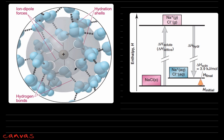The Na⁺ ion is surrounded by a primary hydration shell of water molecules (oxygen facing inward). Beyond that, water molecules hydrogen-bonded to the first shell form a secondary hydration shell. The ion is trapped inside these shells, making it very difficult to escape and recombine, which is why Na⁺ and Cl⁻ do not recombine after dissolving.